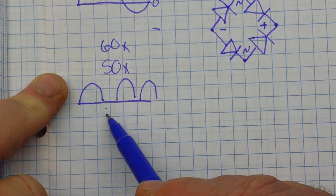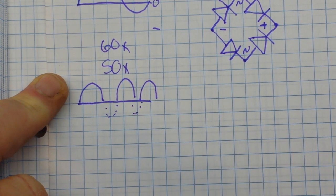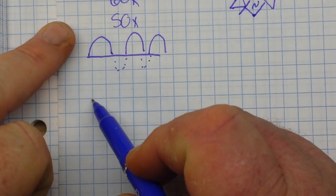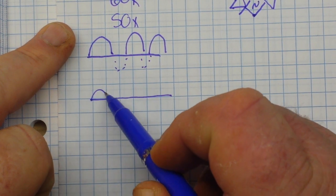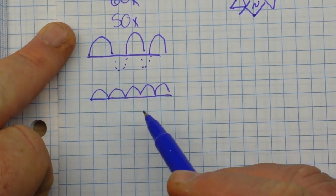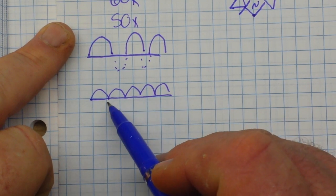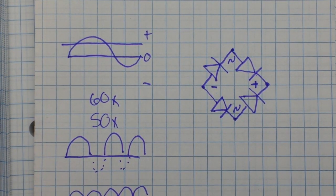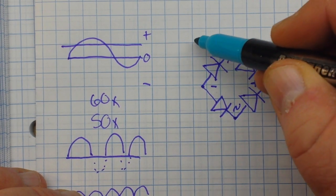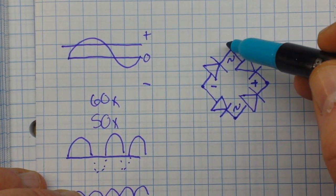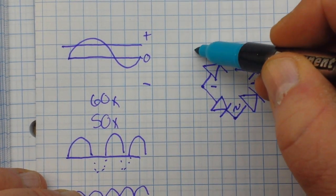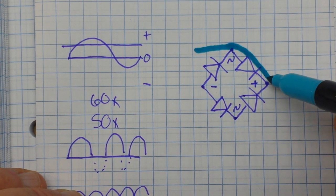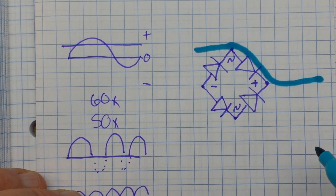But if we use a full wave bridge rectification, it looks like this. And what's happened is those negative portions have been flipped around. So when this part of the AC wave is more positive than this part, the current comes in here, travels through this diode, and out through there.